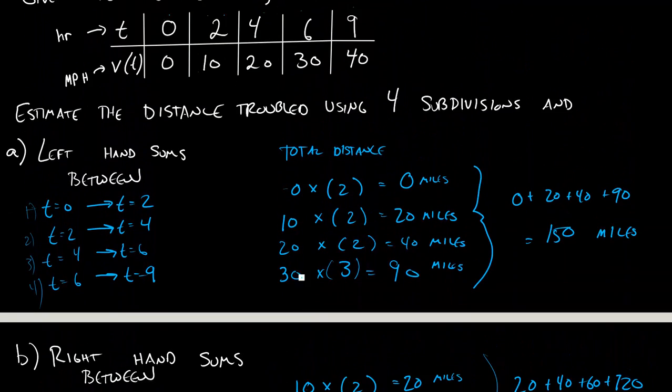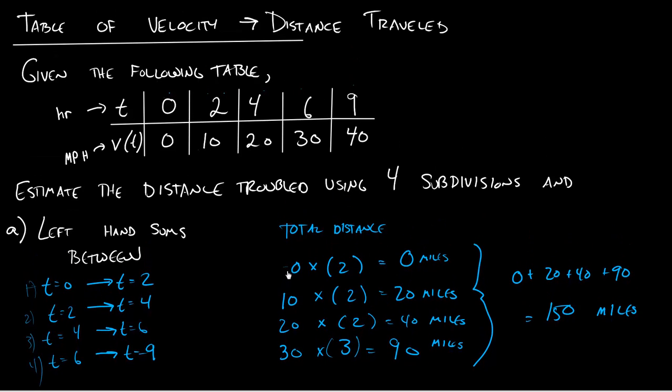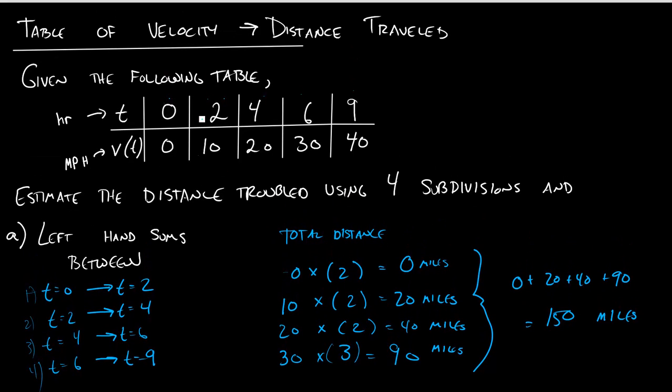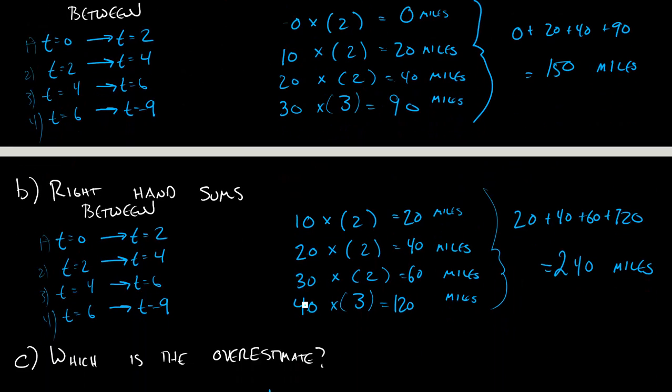So big idea with each of these: we break it up into kind of four little problems. When it says how far did I travel between 0 and 9 hours, I say let's look at these little areas they give us, figure out how far we traveled in each of those little areas, 0, 20, 40, 90, and then just add them up. We can either do that using the left side velocity as our estimate for how fast we were traveling, or the right side velocity.